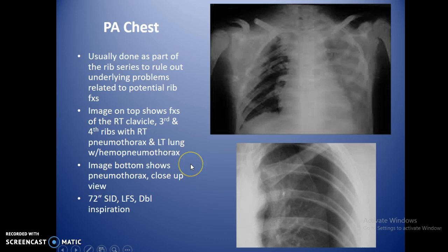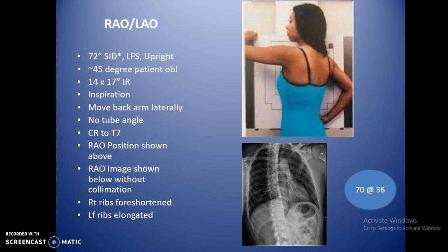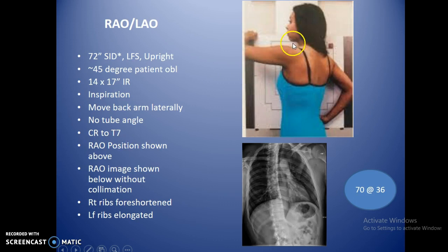The PA is done at 72 inches SID on deep inspiration. For RAO/LAO, also 72 inches, with 45-degree patient obliques in a true oblique position. Use a 14 by 17 IR with the longest axis top to bottom, on inspiration, with the other arm moved back out of the way. CR is at about T7. Make sure the first rib is included — if it's clipped, raise the field up half to one inch.